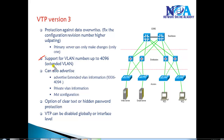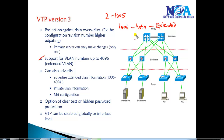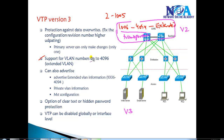Another major enhancement in VTP version 3 is support for extended VLANs. Normal VLANs are 2 to 1005, and extended VLANs range from 1006 to 4094. In older versions, extended VLANs were only supported in transparent mode and were not propagated to other switches. In VTP version 3, extended VLANs can be created and also propagated within VTP advertisements, so extended VLAN information is no longer restricted.